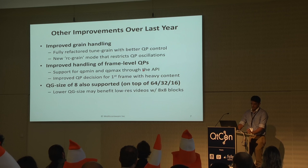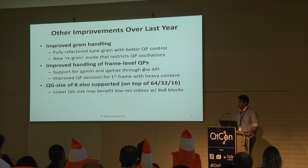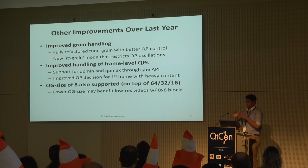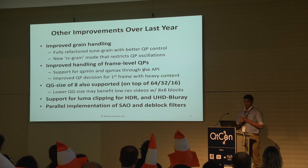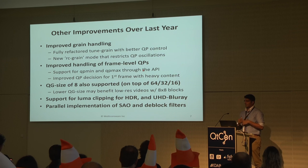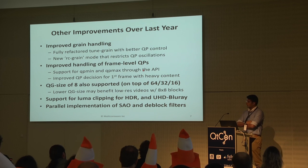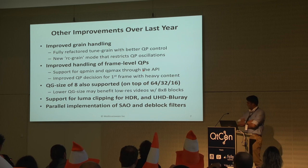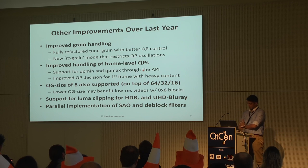We now support a quantization group size of 8, in addition to 64, 32, and 16 — important especially for low-resolution videos where smaller block sizes are more likely. We've added HDR support including Luma clipping specification, as 4K with HDR is delivering the expected wow factor and most 4K TVs ship with HDR. We also support UHD Blu-ray via a parameter in our CLI. We've also implemented a parallelized version of a few filters; while the speed-up wasn't massive, they are now fully parallelized in X265.